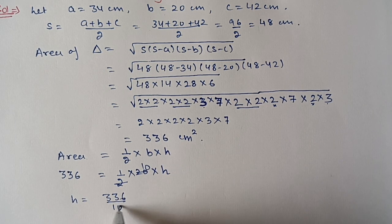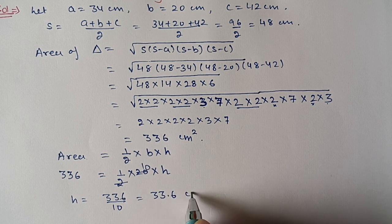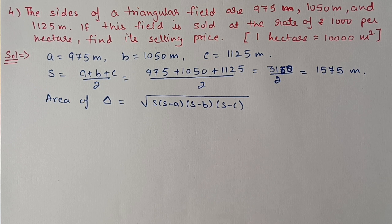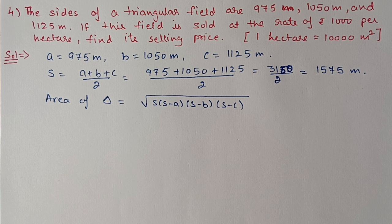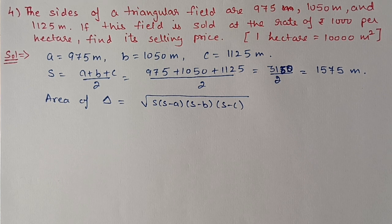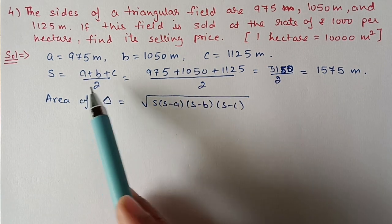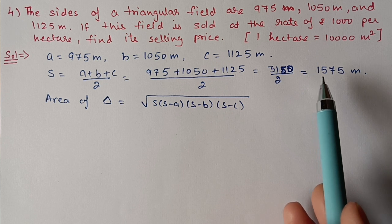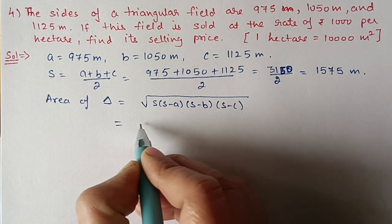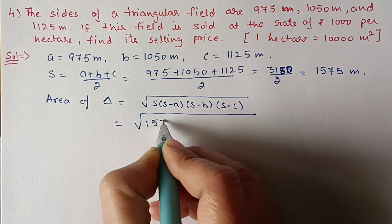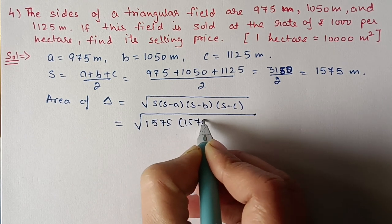Question four: the sides of a triangular field are 975 m, 1050 m, and 1125 m. If this field is sold at the rate of ₹1000 per hectare, find its selling price. Using Heron's formula, we first calculate the semi-perimeter: s = 1575 m.